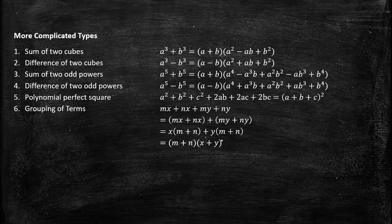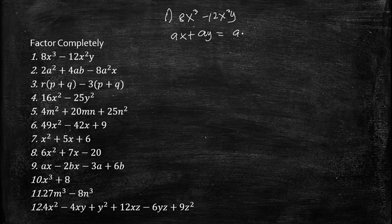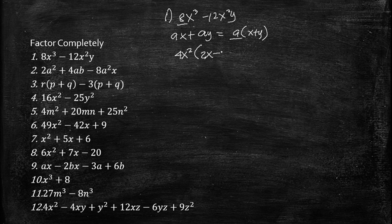So for our elementary factors, we have to factor completely numbers 1 through 12. In number 1, we have 8x³ minus 12x²y. This is the common factor form where ax + ay = a(x + y). The common factor here is 4x², so factoring it out gives 4x²(2x − 3y).